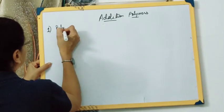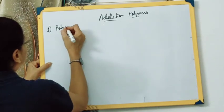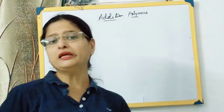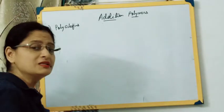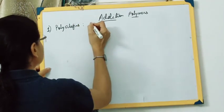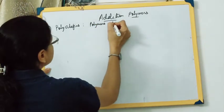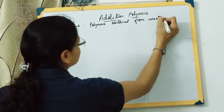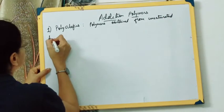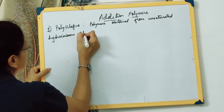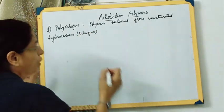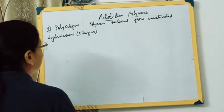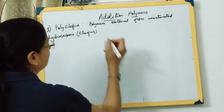First, we have the polyolefins — polymers obtained from unsaturated hydrocarbons, that is olefins, which contain a carbon-to-carbon double bond. You will find a carbon-to-carbon double bond in case of polyolefins.